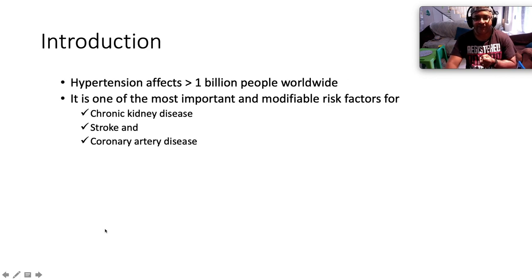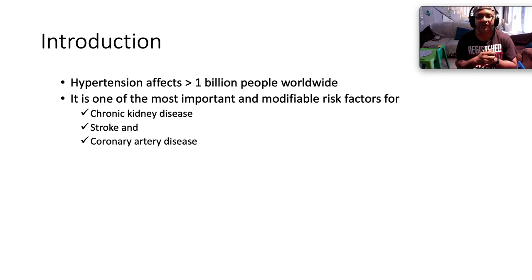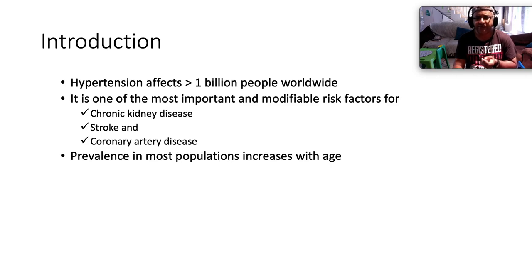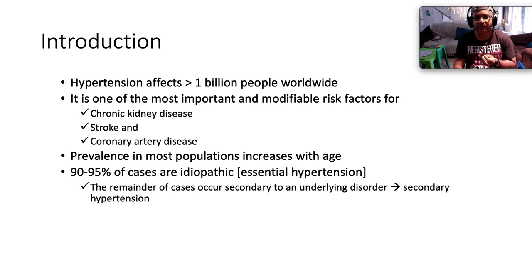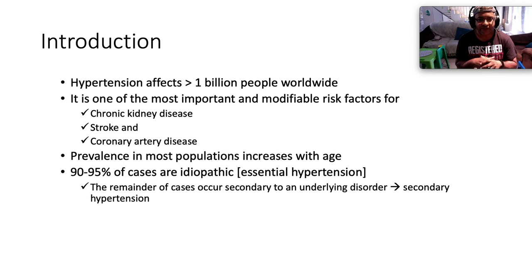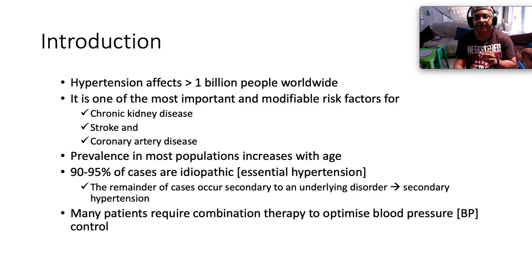Hypertension affects more than one billion people worldwide — it is one of the most important and modifiable risk factors for chronic kidney disease, stroke, and coronary artery disease. Prevalence increases with age in most populations. Some 90 to 95 percent of cases are idiopathic, which is what we term essential hypertension. The remainder occur secondary to an underlying disorder — secondary hypertension — which will be covered in a subsequent video. Most patients require combination therapy to optimize blood pressure control.